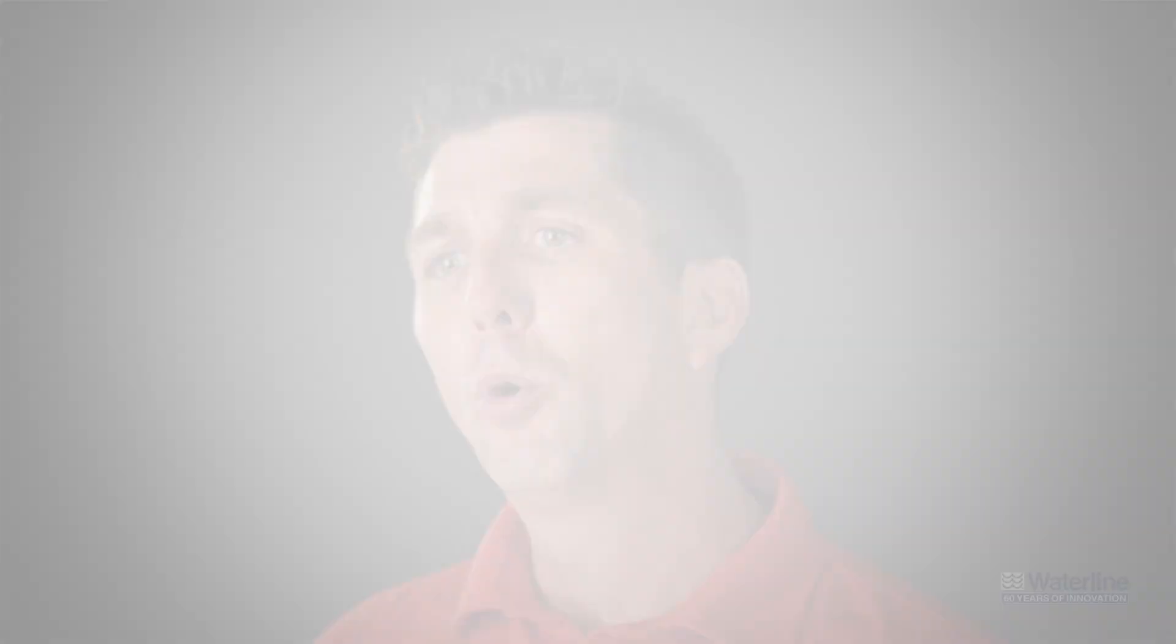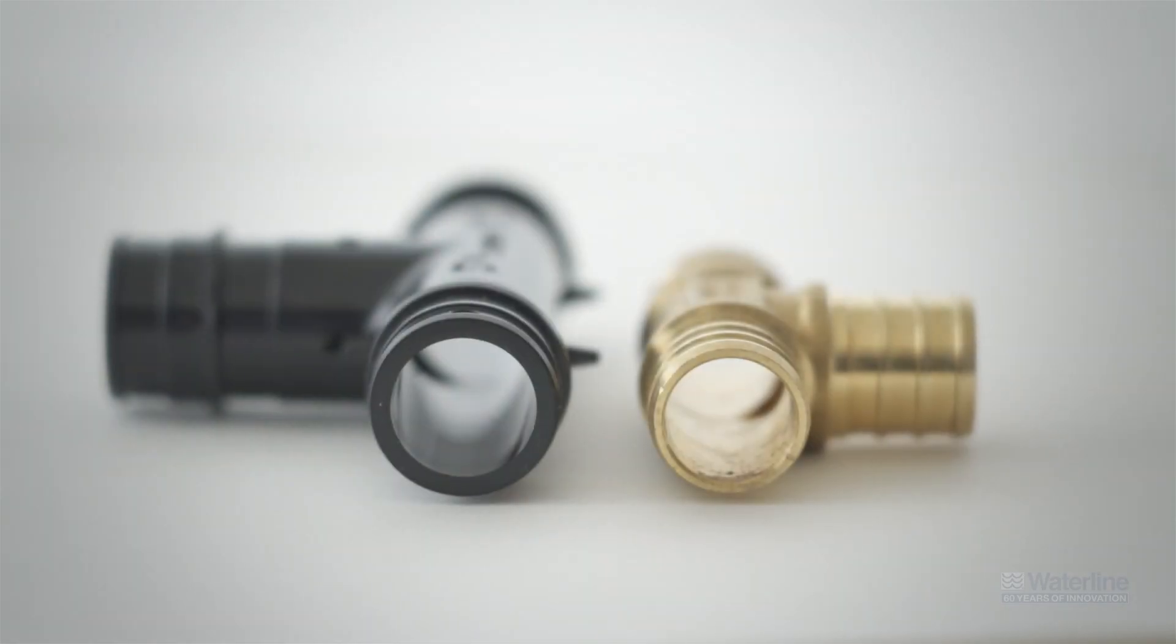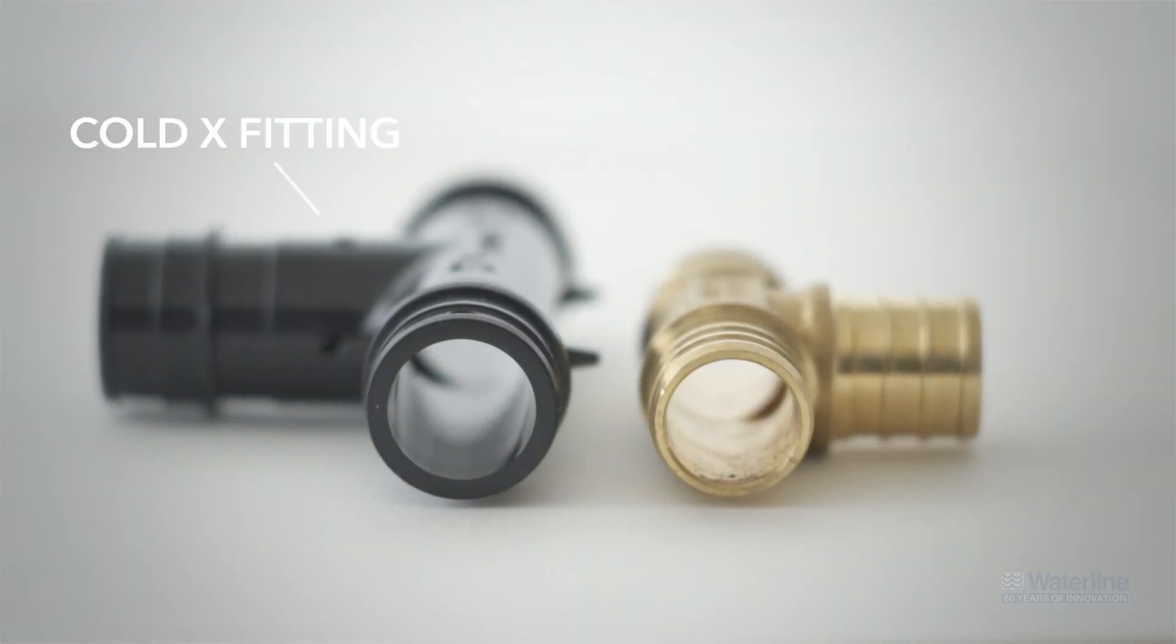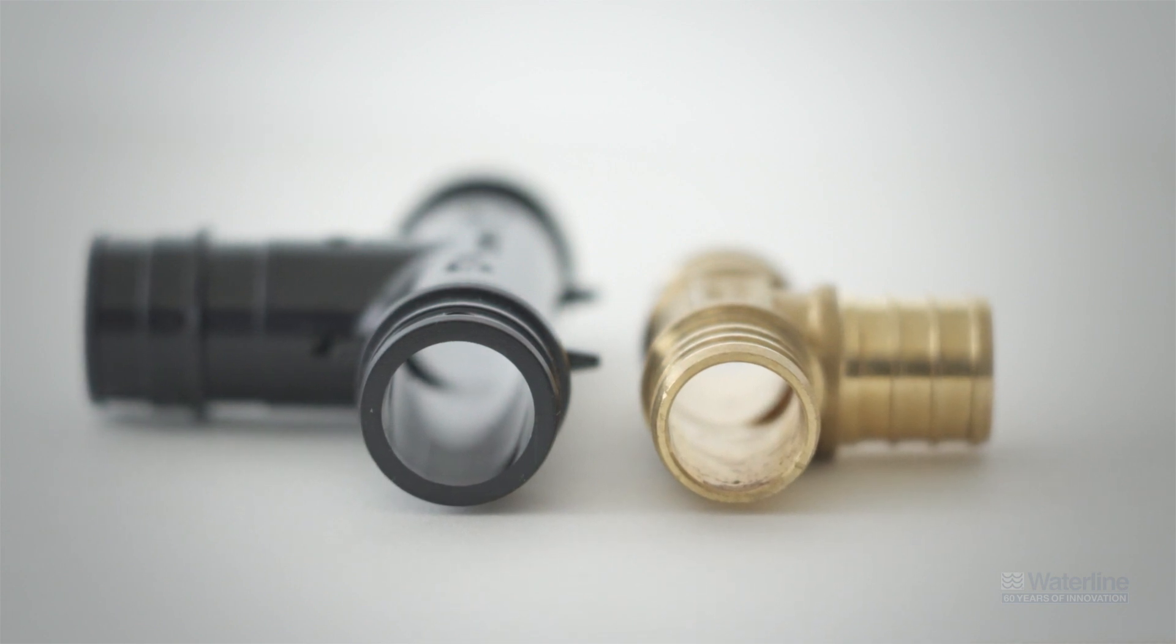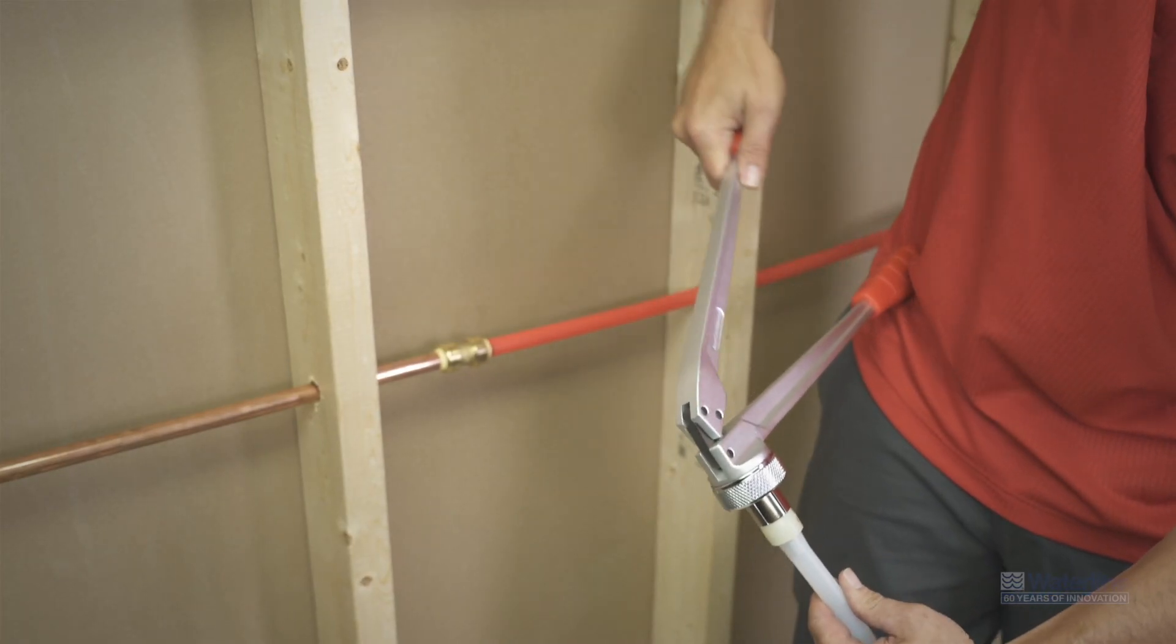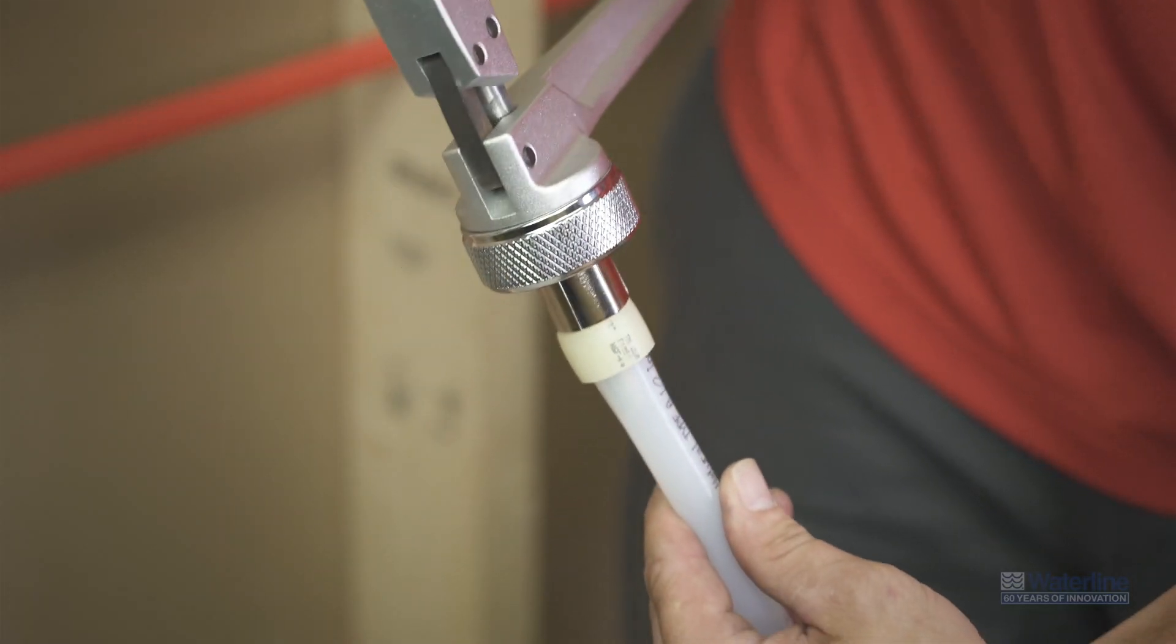So why would I use PEX-A over PEX-B? One of the main reasons is an incredible increase in flow rate. If you compare a half-inch ColdX fitting to a traditional half-inch barb fitting from Waterline, you will immediately notice that there is a significant difference in each fitting's diameter. Since we are making the pipe fit the fitting in a cold expansion connection rather than making the fitting fit the pipe, you end up with a much greater flow rate.